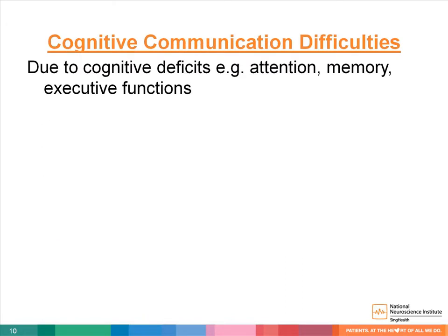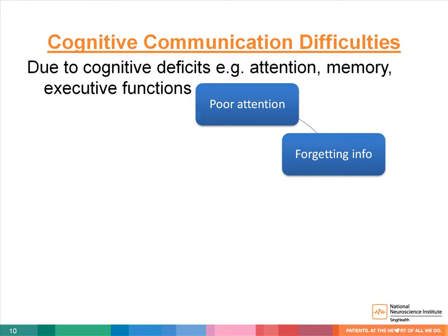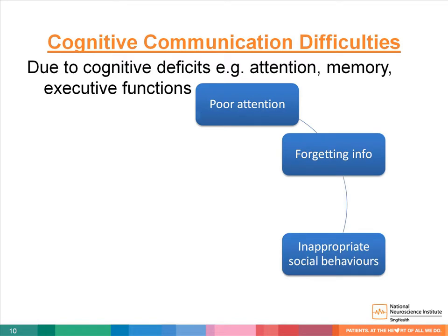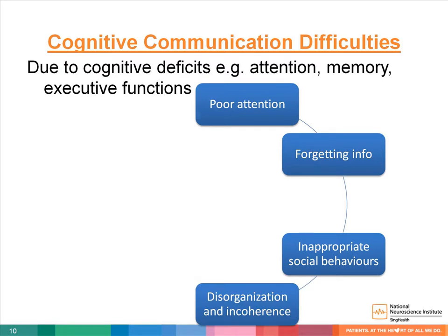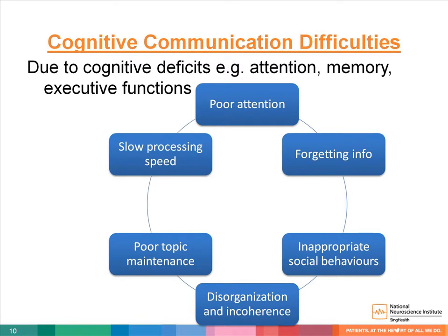Communication difficulties may also arise after a stroke due to changes in a person's cognitive functions, for example attention and memory. These may be evident during interactions as poor attention and eye contact, forgetting very quickly, displaying inappropriate social behaviors such as being impulsive or interrupting others, sounding disorganized or incoherent, changing topics frequently, and slow processing and responding. The patient may also deny difficulties, possibly demonstrating poor awareness and insight.